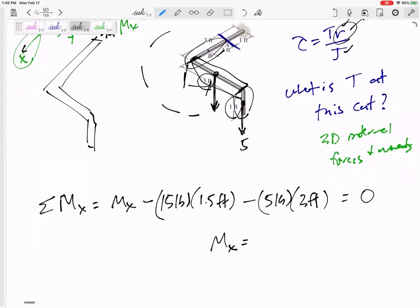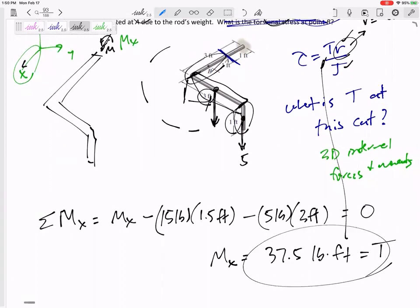I did all that to get MX is 37.5 pound feet. That is my T. That is my T. All right, we'll do this next class. You might have to do statics. I mean, you might have to do it in your first two weeks of class to find that internal torque T. Once we find the internal torque T, then it's really TR over J.